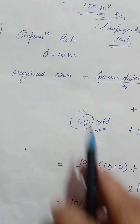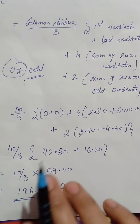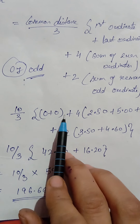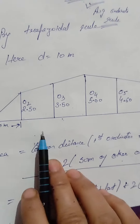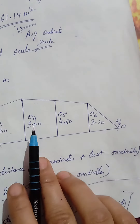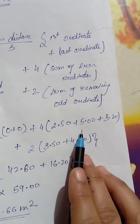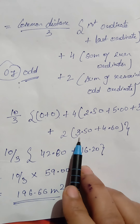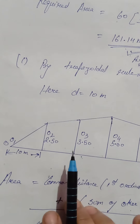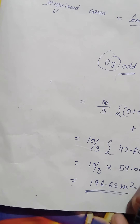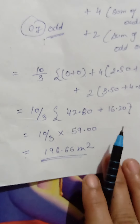The last method is Simpson's rule. The formula for total area is: common distance by 3, into first ordinate plus last ordinate, plus 4 times the sum of even ordinates, plus 2 times the sum of remaining odd ordinates. The first ordinate is 0 and the last ordinate is 0. We are solving the same numerical. We have 7 ordinates — odd in number — so the condition for Simpson's rule is satisfied.